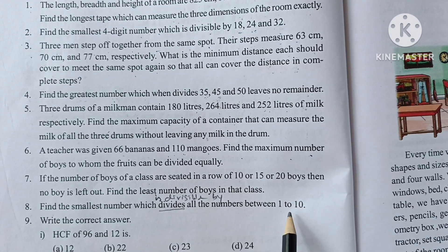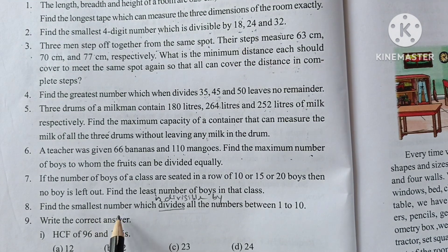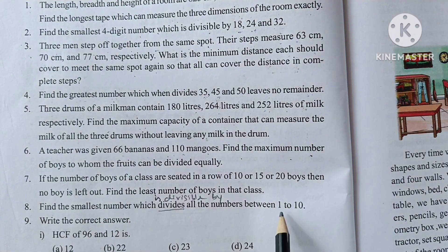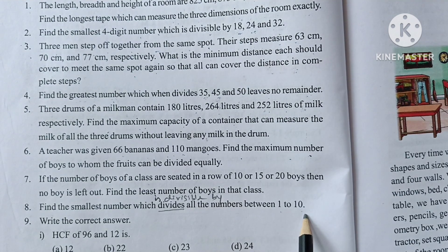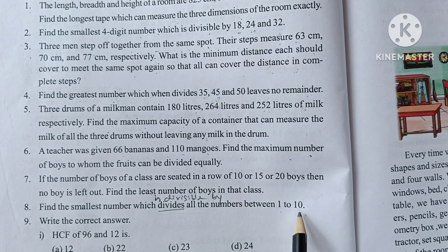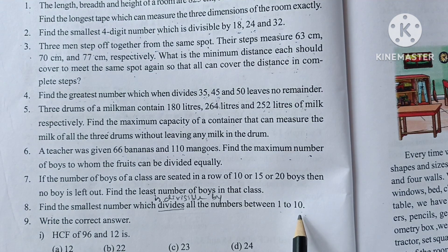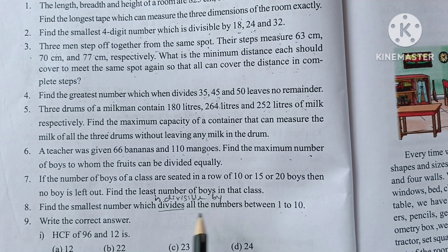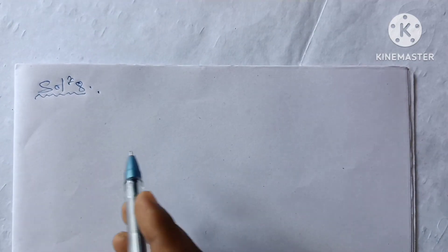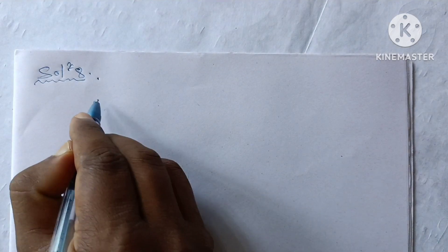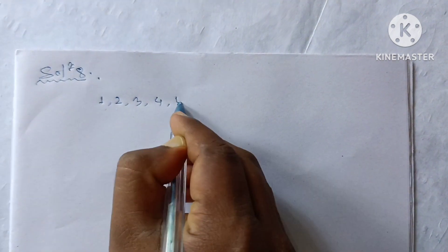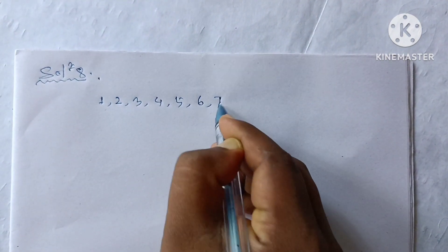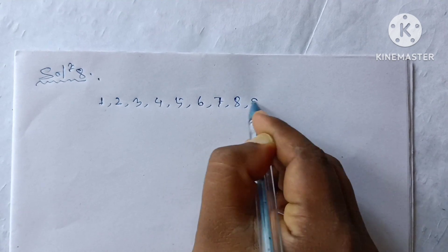The number which is divisible by all the numbers is the LCM. We find the LCM of 1, 2, 3, 4, 5, 6, 7, 8, 9, 10.